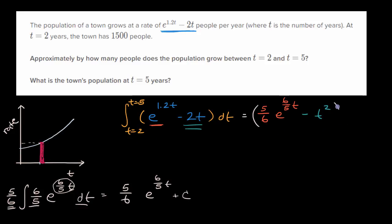And we are going to evaluate that at five and two and find the difference. So let's evaluate this at when t is equal to five. When t is equal to five, you get five-sixths times e to the six-fifths times five is e to the sixth minus five squared, so minus 25. And so from that, I want to subtract. When we evaluate it at two, we get five-sixths e to the six-fifths times two is the same thing as twelve-fifths, or we could say that's 2.4, minus four. Two squared is four.